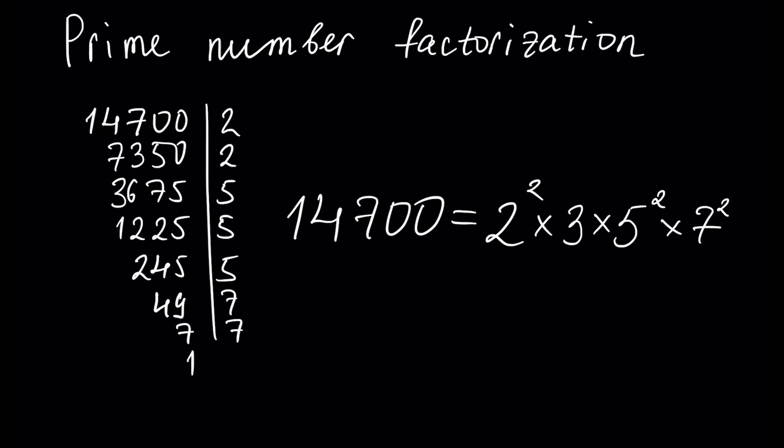In this tutorial we will talk about prime number factorization, or factorization into prime factors, or representation of any composite number as a multiplication of prime numbers. We have a result in mathematics that every composite number can be represented uniquely as a product of prime factors. At the end of this tutorial you will learn how to write any composite number as a multiplication of prime numbers, as in the example you see now.